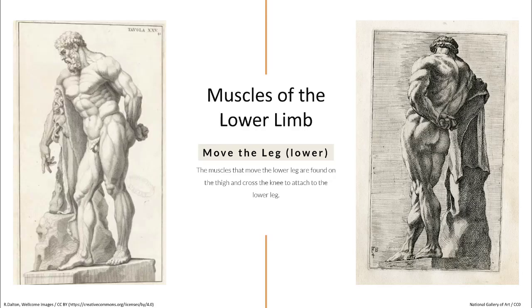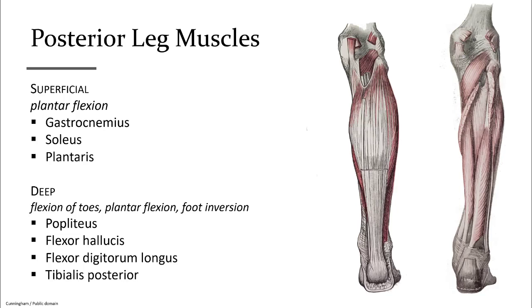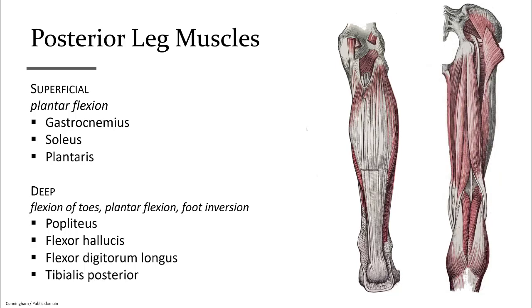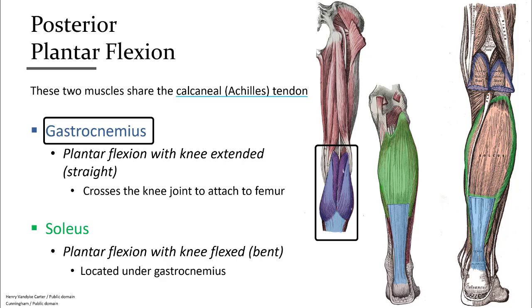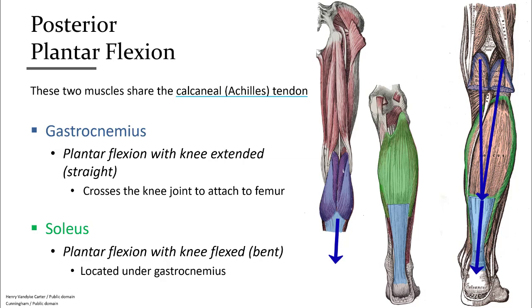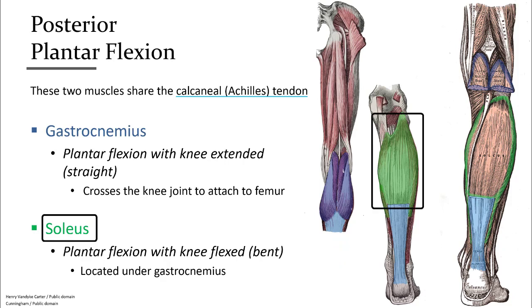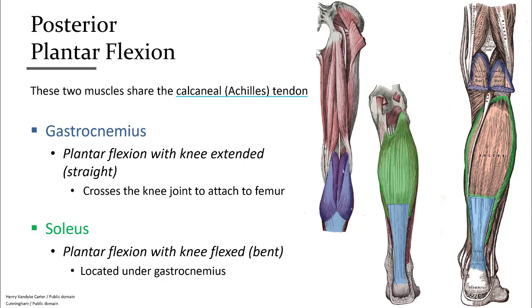The final region we will discuss is the lower leg. On the posterior lower leg or calf region, there are several muscles involved in moving the foot; we will focus on the superficial muscles. The most superficial is the gastrocnemius, a prominent two-headed muscle that starts on the femur and attaches to the calcaneus or heel bone via the calcaneal or Achilles tendon. Beneath it is the wide, flat soleus, which also attaches to the Achilles tendon. Both gastrocnemius and soleus are involved in plantar flexion. Due to the gastrocnemius crossing the knee joint, it is the main muscle for plantar flexion when the leg is straight. When the knee is bent, the gastrocnemius goes slack, so the soleus becomes the prime mover in plantar flexion.